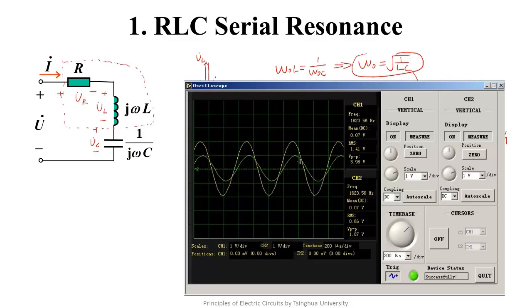We can see the input and output voltages are in phase, which means the circuit is in resonant condition. Now we adjust the frequency of the source higher, and we can see the input and output voltage aren't in phase anymore, and the amplitude of the output voltage is smaller than that in resonant condition.